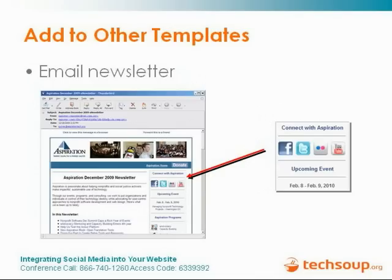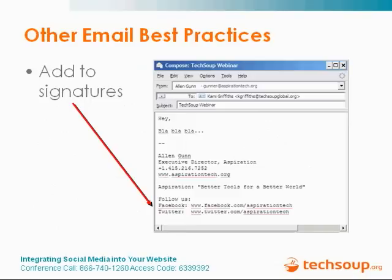In addition, if you are sending out email using a template — using a tool like Vertical Response, Constant Contact, or Democracy in Action — all of those tools let you create templates for sending out email. It is critical that you integrate your social media links into your email templates, so that as you are sending out email messages, you are conveying the message that you can be reached on these other channels. The same block from our website we have put at the top of our email template. It is also nice to add the relevant links to the signature of your email messages.